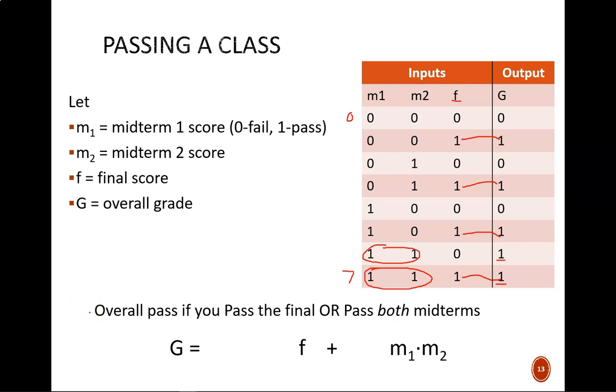We should get an overall pass if you pass the final or pass both midterms. Now simply translate this into symbols. Overall pass is defined as G. If becomes this equal sign. The final is replaced with F. The symbol for OR is a plus sign. And both midterms becomes M1 ANDed with M2. Why AND? Because AND logic requires all inputs to be true for the output to be true. Whether we write this logic in the original full sentence, in this truth table, or in this equation, we are saying the same thing.